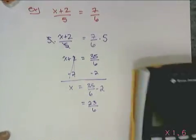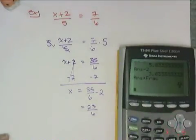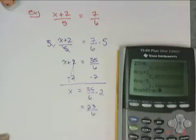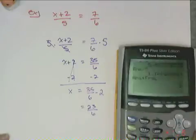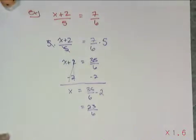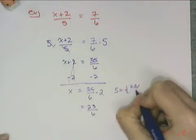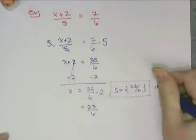So that means that my answer is 23 over 6. And I better check it to make sure I did it right. So I have 23 divided by 6 plus 2 divided by 5 gives me that decimal, which I'm going to convert to a fraction, which indeed is 7/6. So that means my answer is correct. So it's 23 over 6. Box it off. Happy face.